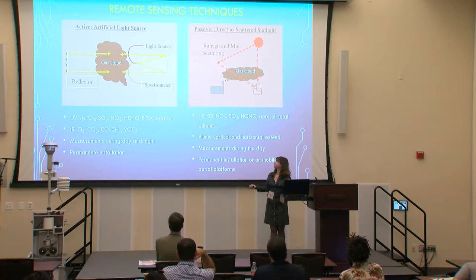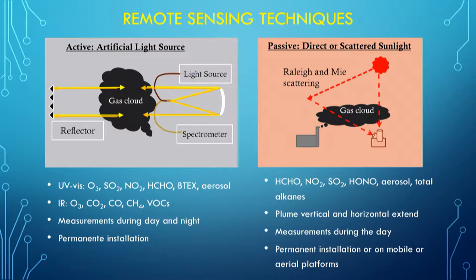Remote sensing can work with artificial light — for example, with a long-path instrument where you have a telescope that sends light through the atmosphere. That light path can be very long, sometimes up to a kilometer away to your reflector, and then it sends back to your telescope and the light gets analyzed for absorptions along that light path. This method works both in the UV and IR and you can conduct measurements during the day and during the night. It's usually a permanent installation because you have retro-reflectors, although recently people have also started putting retro-reflectors on drones for very short-term measurements of emissions from a smokestack or a small unit.